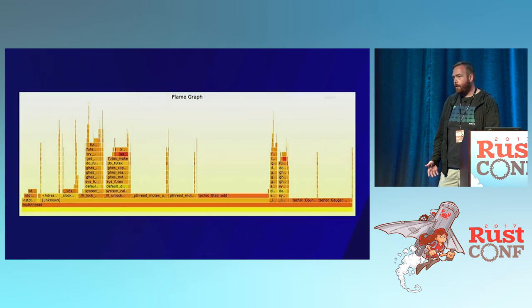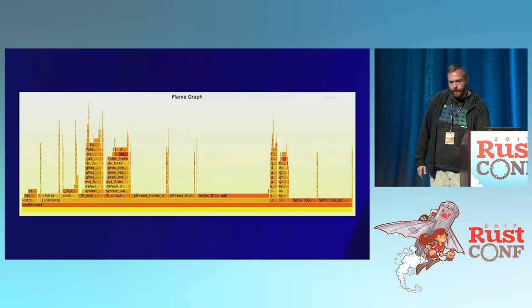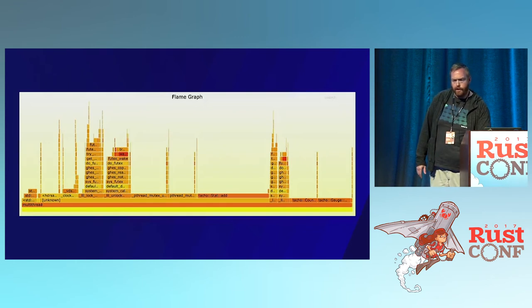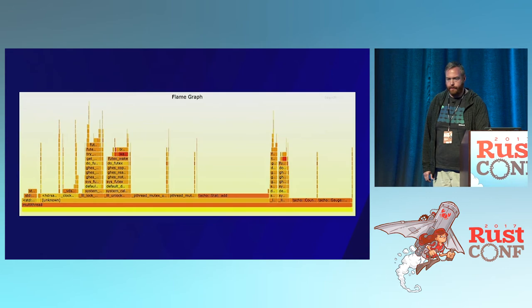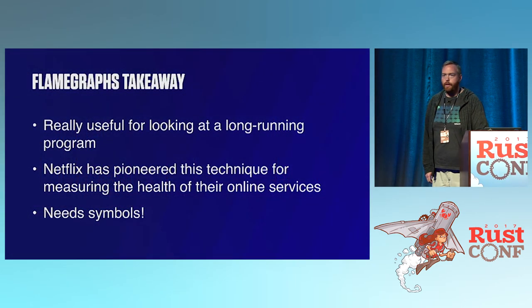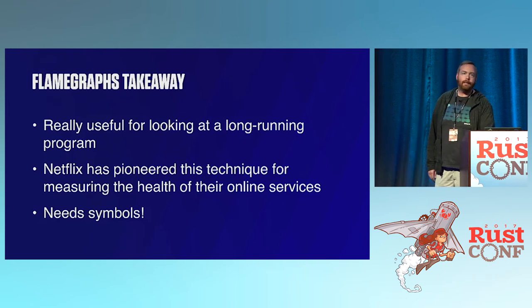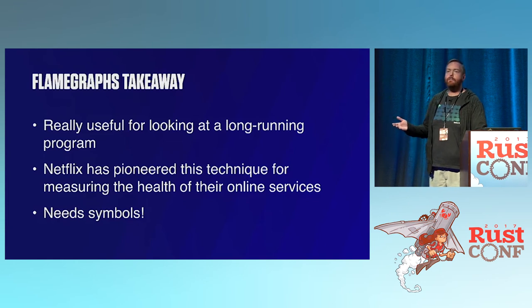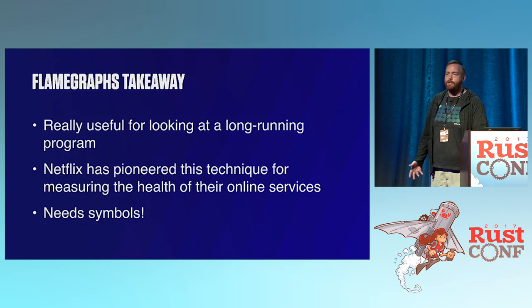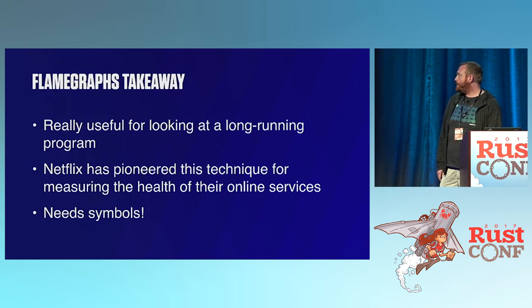Here's the multi-threaded benchmark flame graph — much more complex as you'd expect. You can see we've got a couple threads and a mutex. We'll drill into parts of it from time to time to make sure things look sane. It's really useful for looking at long-running programs. Since what we ship is a proxy that runs 24/7 in people's data centers, it's nice to compare how things look at time T versus 30 minutes from now. Netflix pioneered this technique and uses it to measure the health of all their online services.